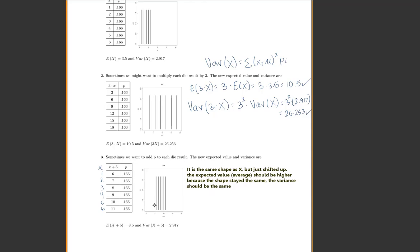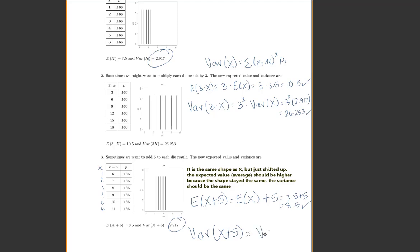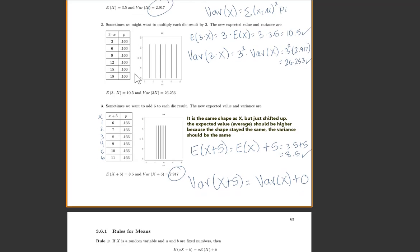The expected value of x+5 equals the old average plus 5: 3.5+5=8.5. The variance of x+5 is 2.917 — exactly the same as before. So when you add a number inside the variance, it comes out as 0. The reason: if you do x+5, the mean is also mean+5, and those +5 terms cancel. When you add a constant in variance it contributes nothing; when you multiply inside variance, it comes out squared.